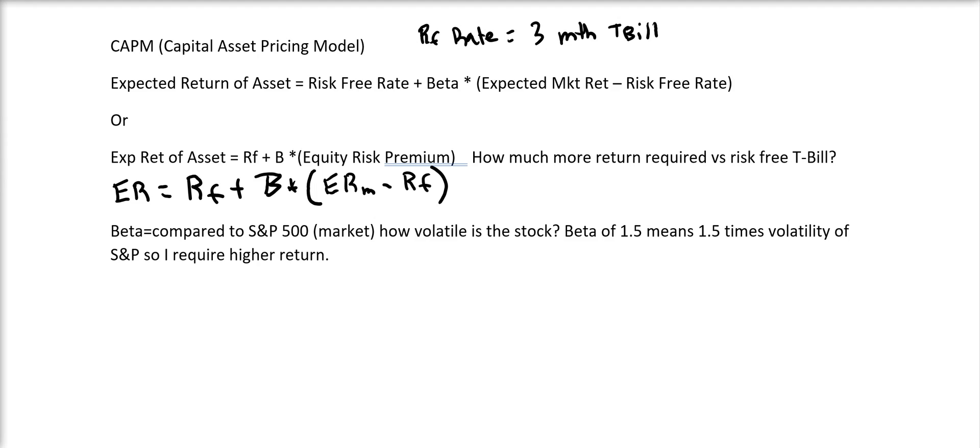It's using the risk-free rate, the beta, and I'll explain that, and the expected market return. The risk-free rate normally is going to be equal to a three-month treasury bill. Why is it risk-free? Well, it's fully backed by the U.S. government. We can always print money, so we don't default on those. But the idea is there's no default risk. And because the duration is so low, three months,